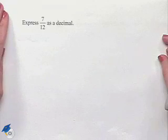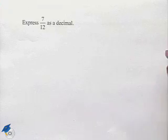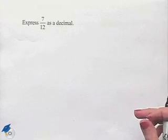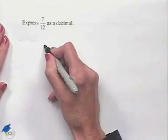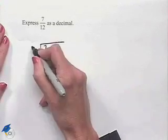In the next problem, we're going to change from a fractional format to a decimal one. Express 7 twelfths as a decimal. In order to change from the fraction to a decimal, we're going to note that the fraction bar indicates division. So we'll have 7 being divided by 12.